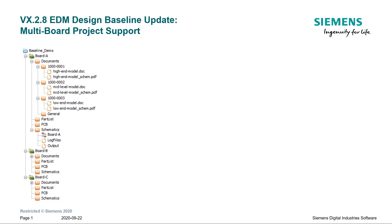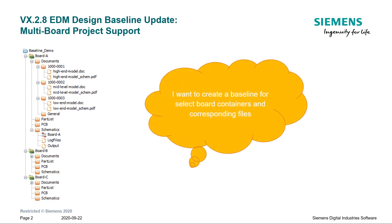The VX.2.8 release brings improvements in multiboard support for baseline and release dataset creation. In previous releases, baseline content could only be filtered for a specific project. For multiboard projects, objects had to be selected manually. The VX.2.8 release introduces filtering rules, which allow users to filter objects based on information such as metadata.